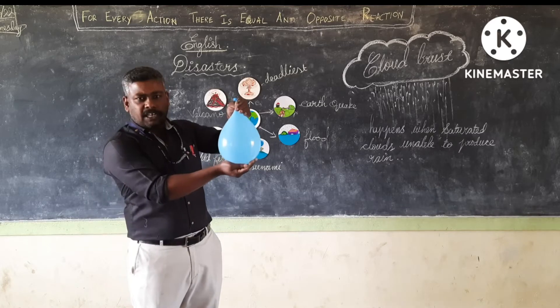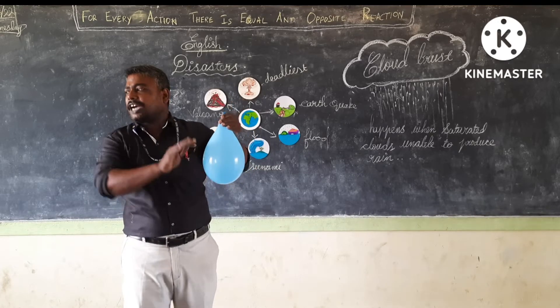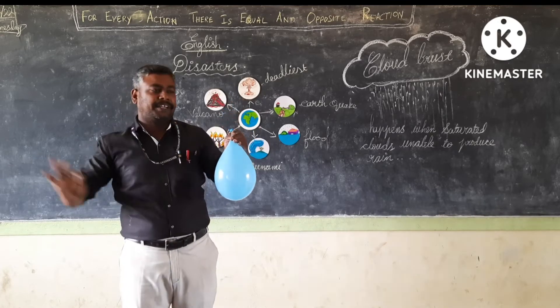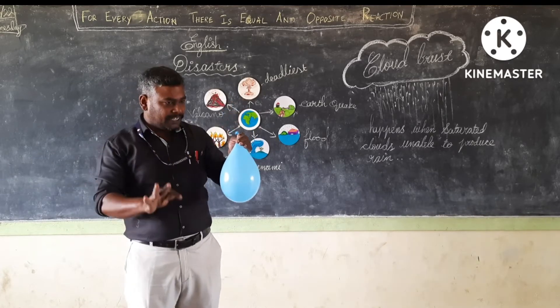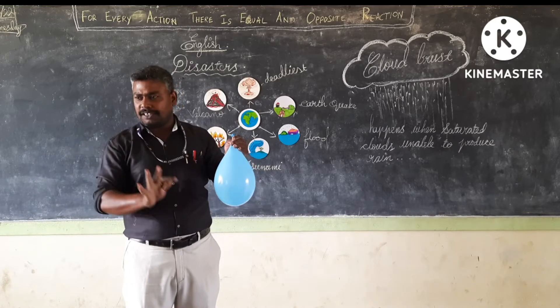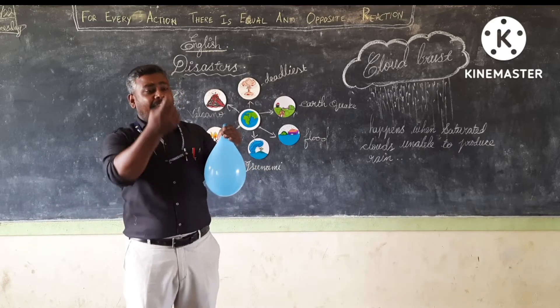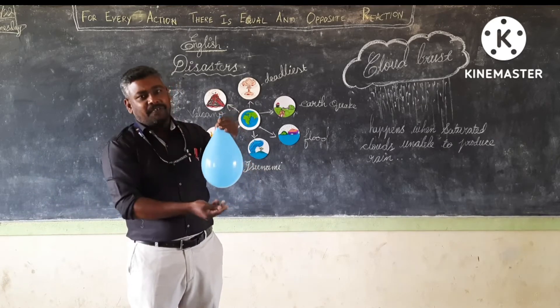Now this cloud is saturated. Saturated means completely wet. And it is about to give rain.